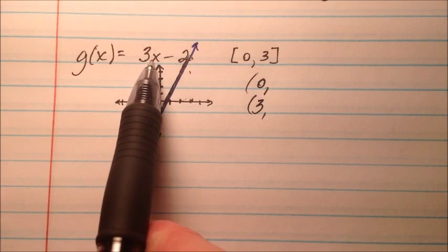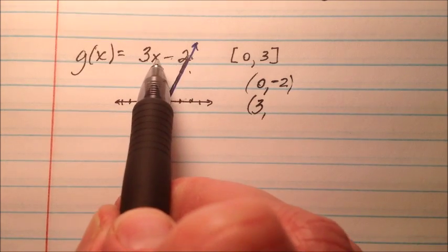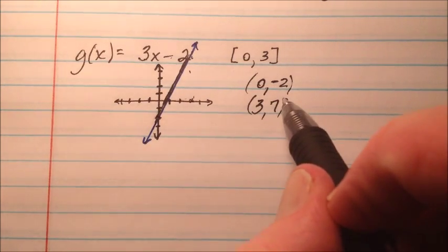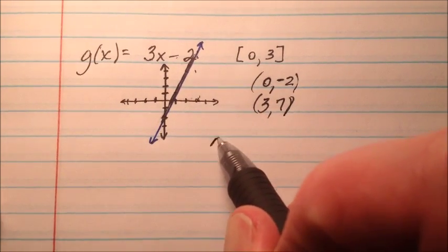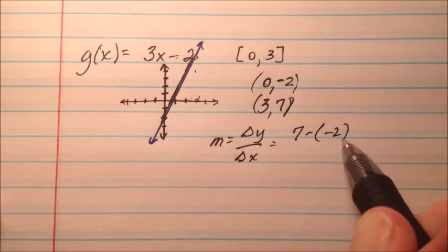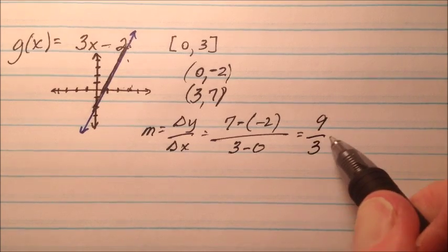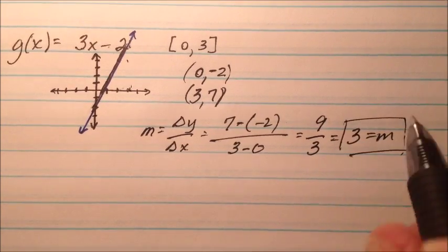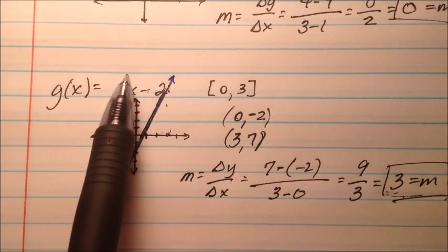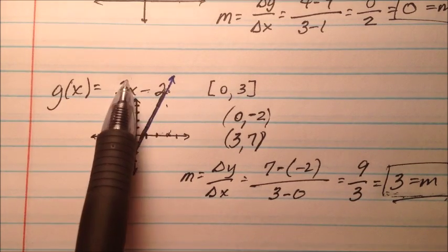So we can grab points at x equals 0 and x equals 3 and plug them in. 3 times 0 is 0 minus 2, so the y value is negative 2. Plugging in 3: 3 times 3 is 9, minus 2 is 7. So we have ordered pairs (0, -2) and (3, 7). The slope is change in y over change in x: 7 minus negative 2 over 3 minus 0, which is 9 over 3, which equals 3 for our slope. That's interesting because the average rate of change is 3, and the slope in slope-intercept form is also 3.